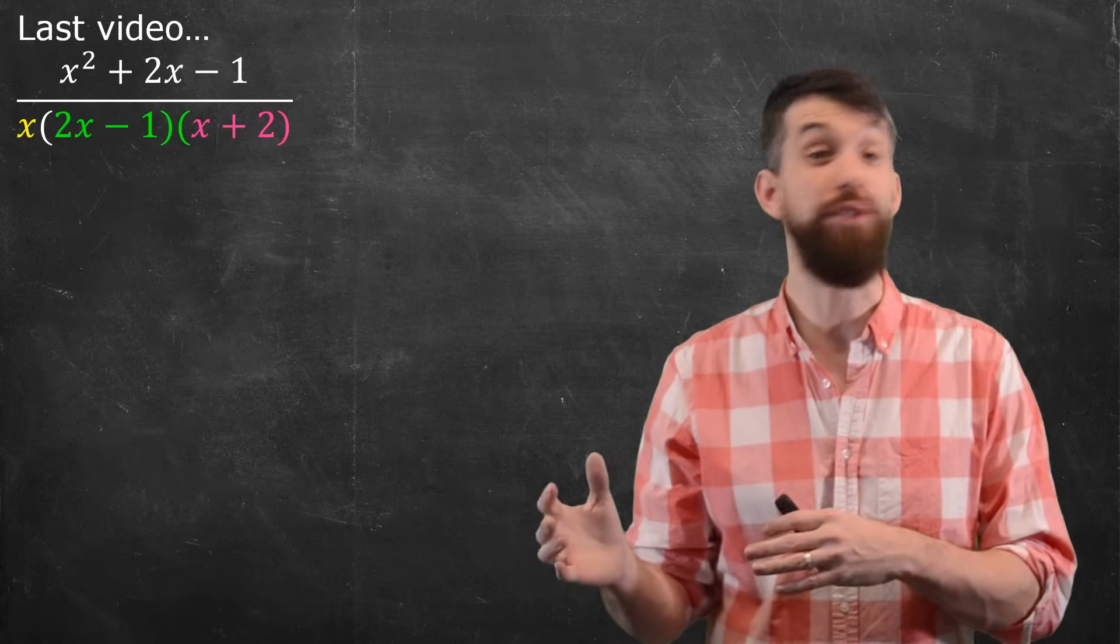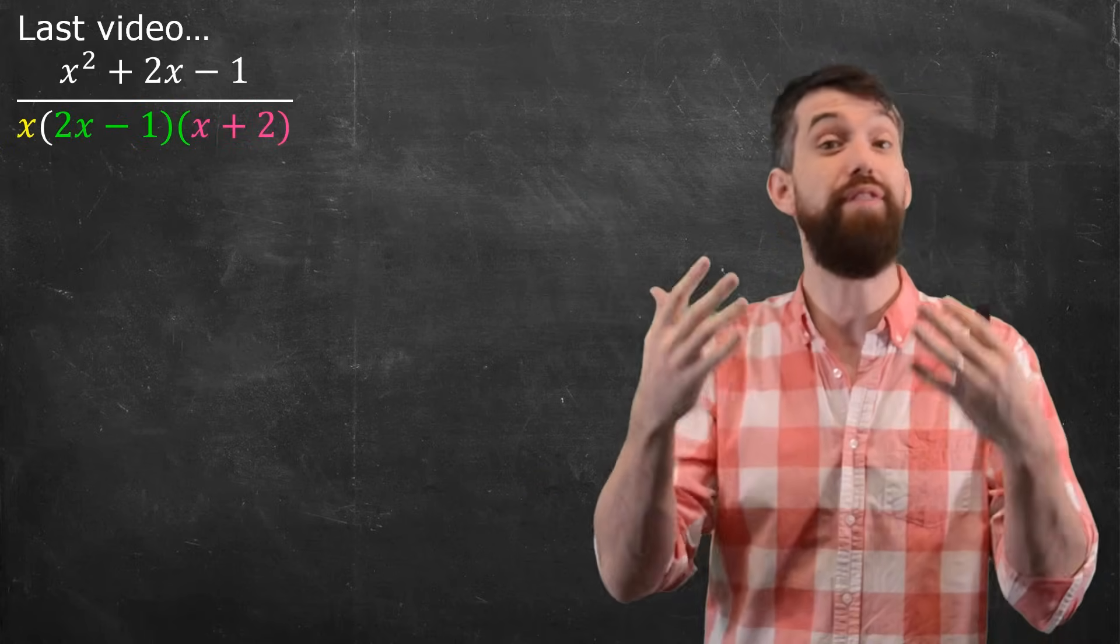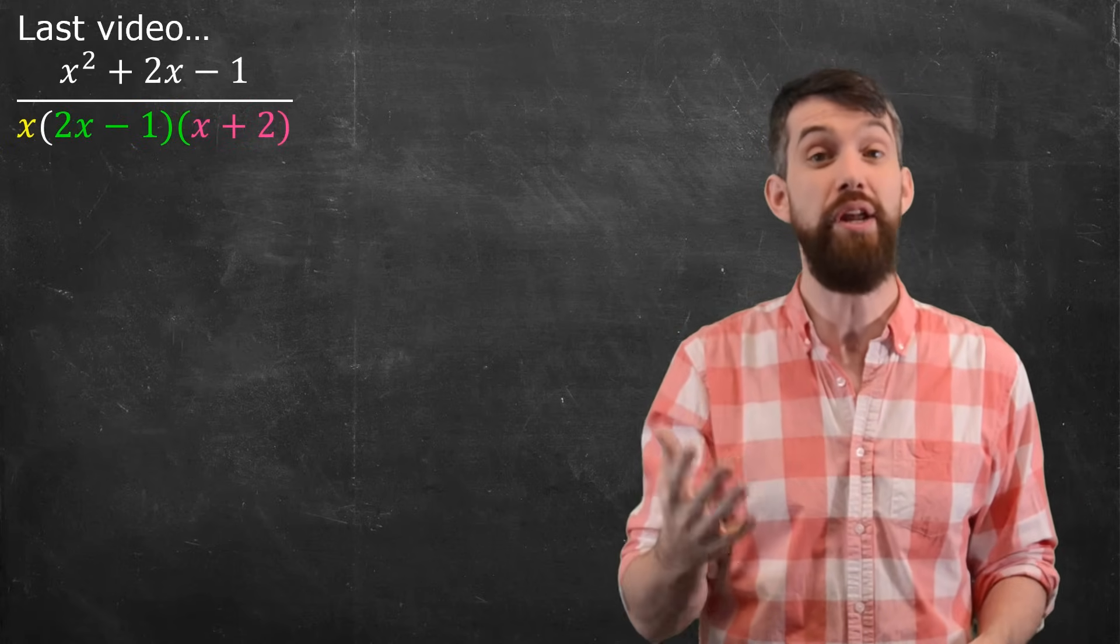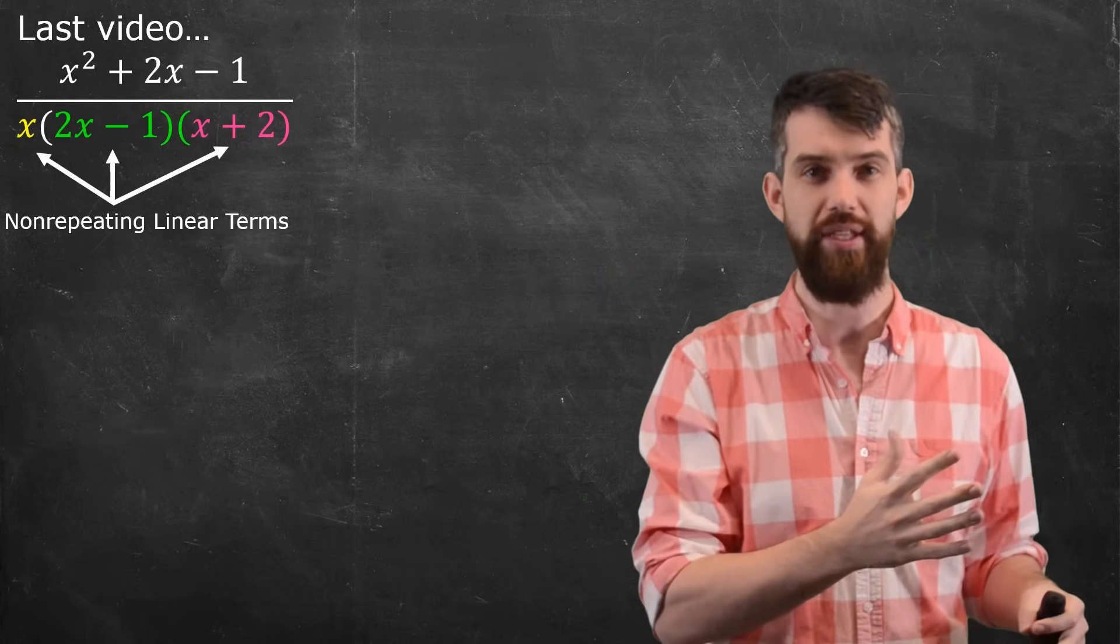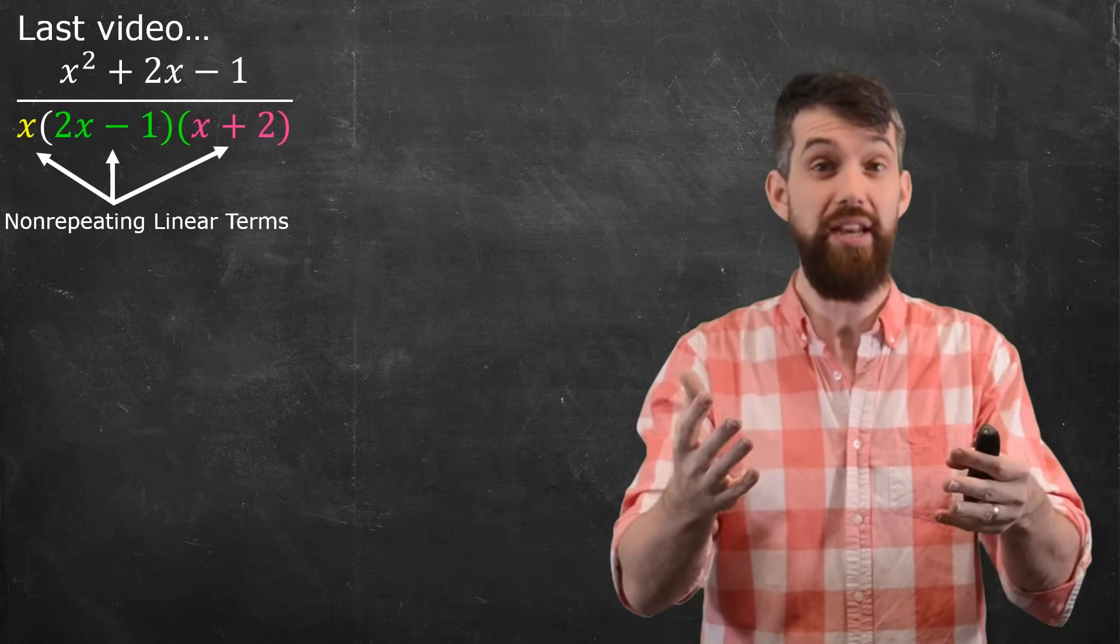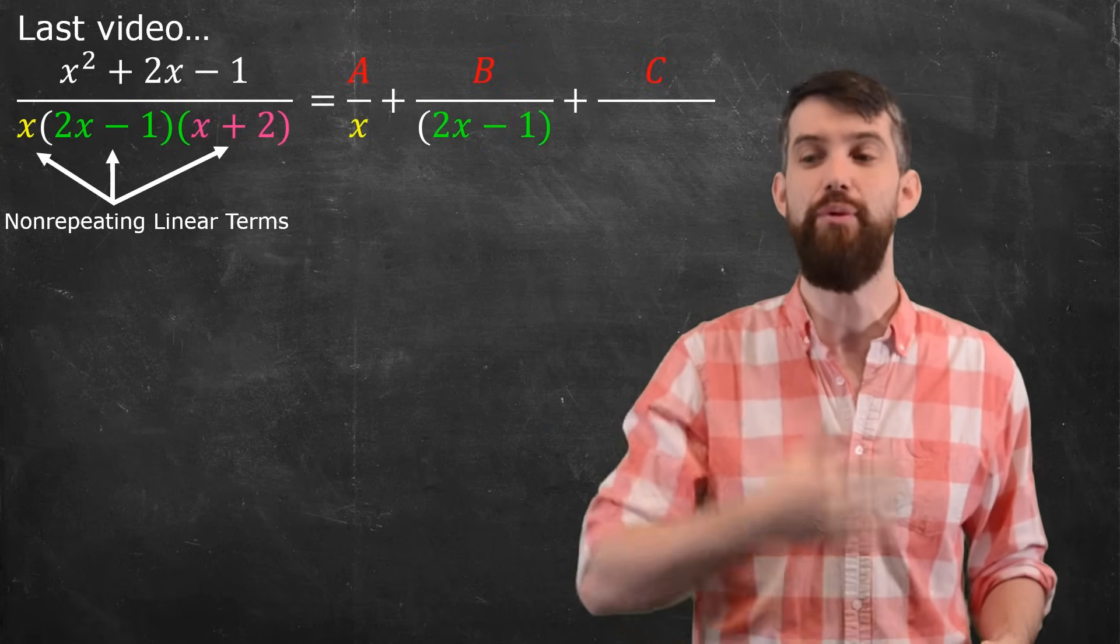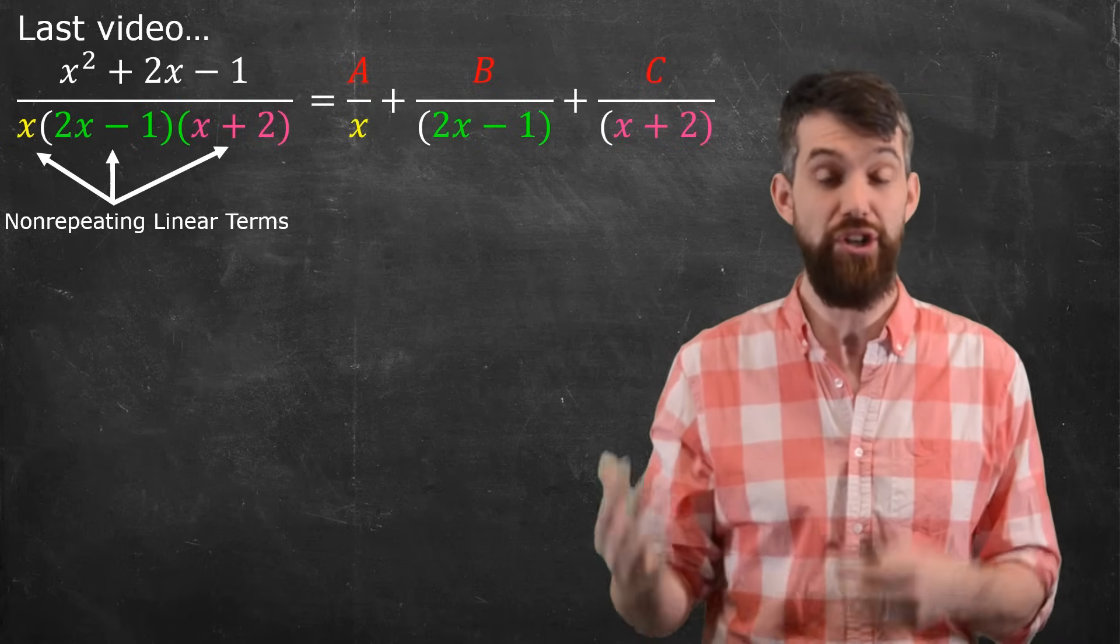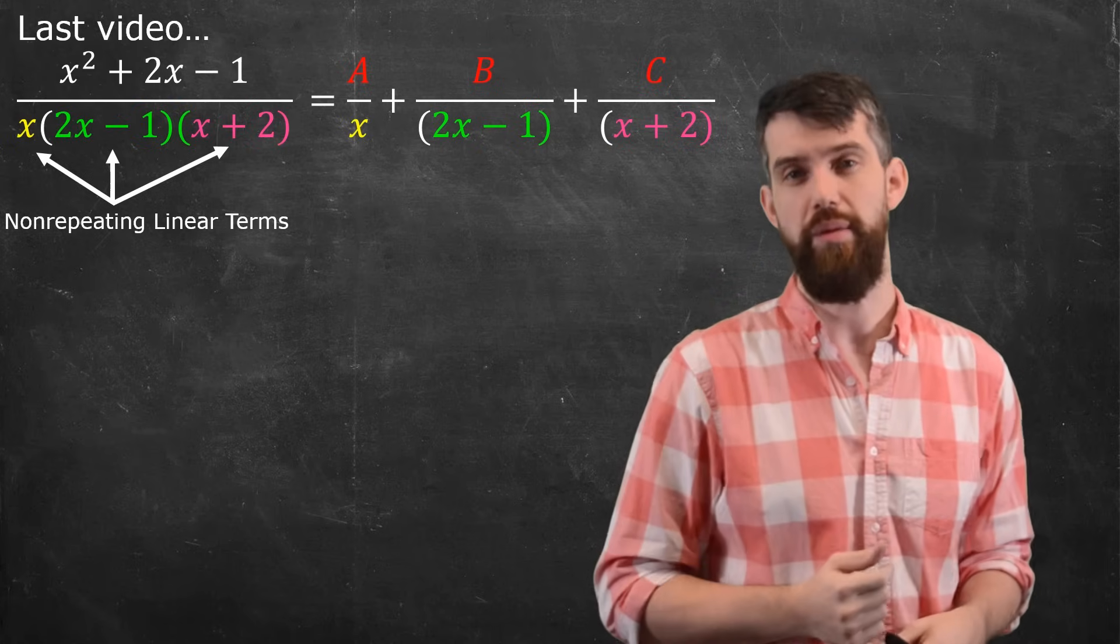In the first video on integration by partial fractions, we studied rational functions—polynomial divided by a polynomial—where the polynomial on the bottom could be written as a product of non-repeating linear terms. When we had this, we would manipulate it so that it was a constant divided by each of the different linear terms in turn, and then do some algebra to figure out what the a, the b, the c, and so on were going to be.